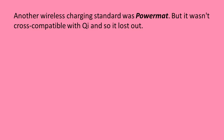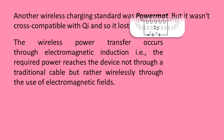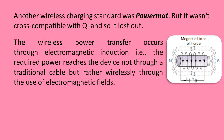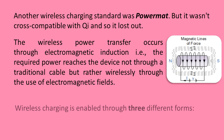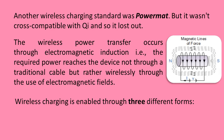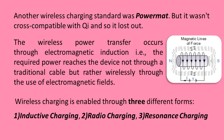Wireless power transfer occurs through electromagnetic induction — the required power reaches the device not through a traditional cable, but wirelessly through the use of electromagnetic fields. Wireless charging is enabled through three different forms: one, inductive charging; two, radio charging; and three, resonance charging.